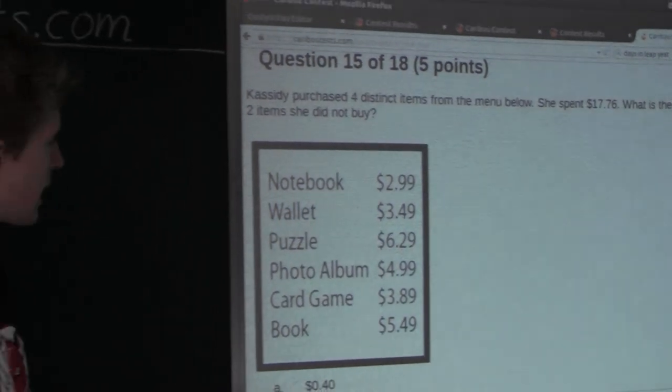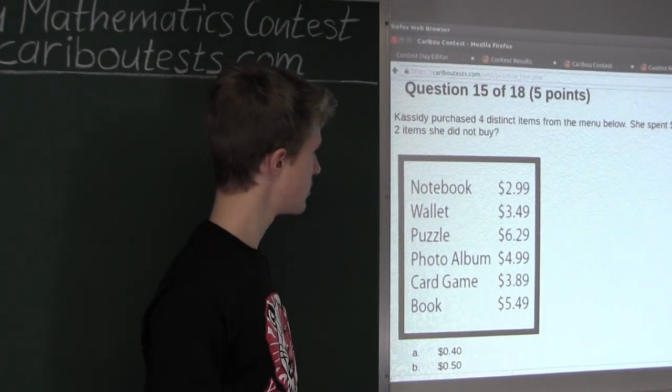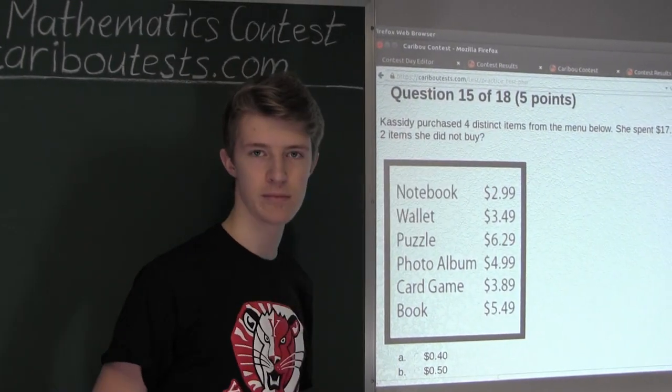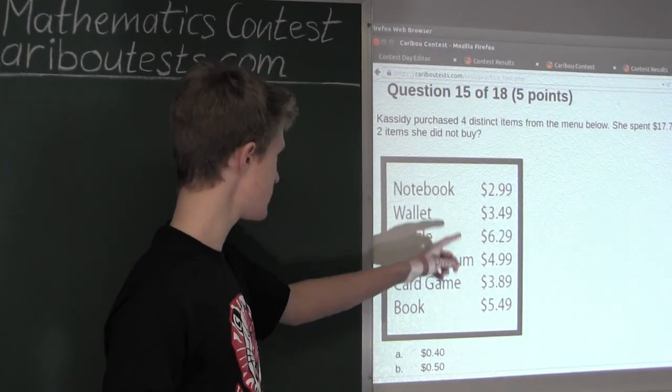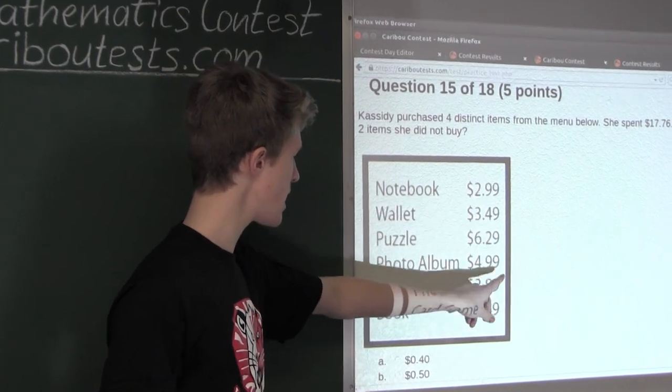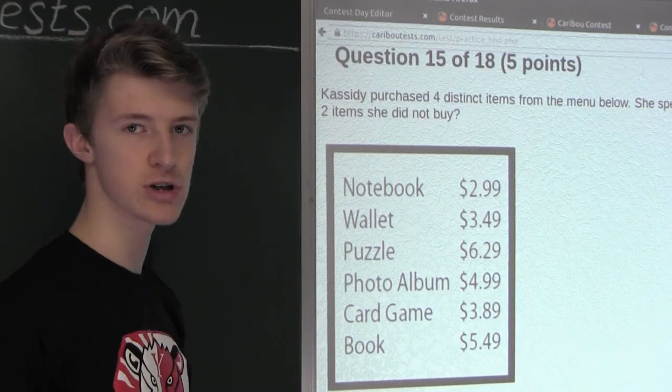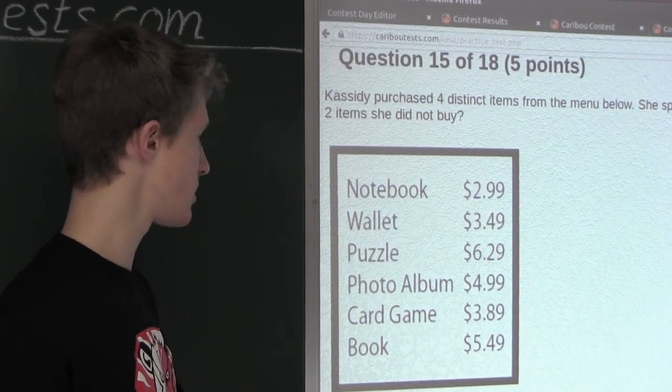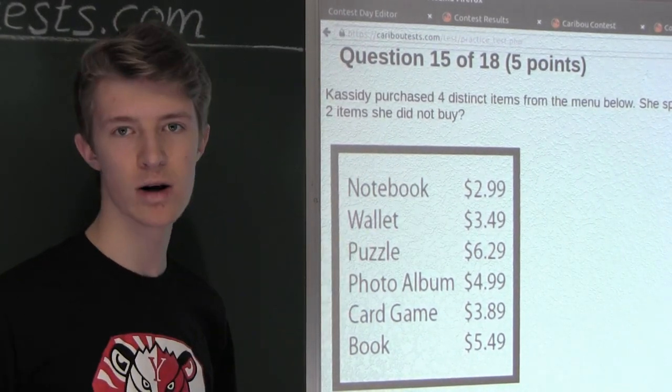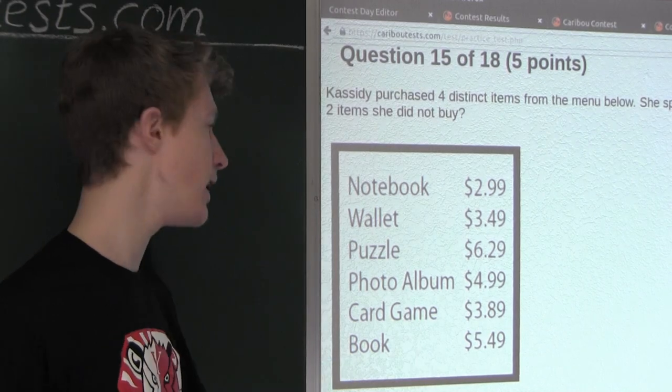Now let's look at the cost of each item. We can see that the price of each item ends in a 9. So, to make it a lot easier on ourselves, we will just add the price of each item by 1 cent so that they all end in a 0.